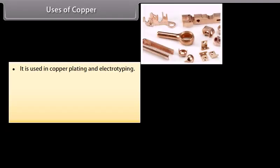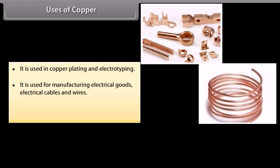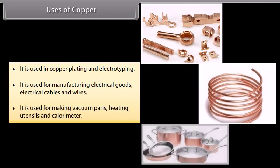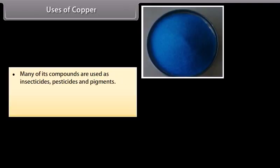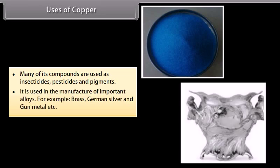Uses of copper. It is used in copper plating and electrotyping. It is used for manufacturing electrical goods, electrical cables and wires. It is used for making vacuum pans, heating utensils, and calorimeter. Many of its compounds are used as insecticides, pesticides, and pigments. It is used in the manufacture of important alloys. For example, brass, german silver, and gunmetal.